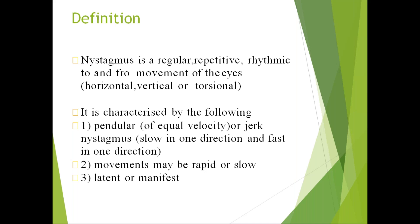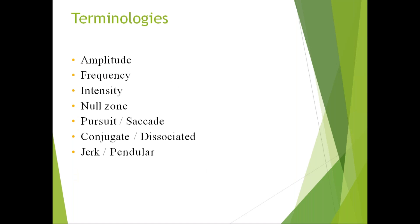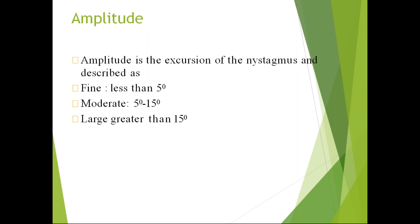Before going deeper into nystagmus, we need to know a few terms: amplitude, frequency, intensity, null zone, pursuit or saccade, conjugate or dissociated, and jerk and pendular movements. Amplitude is the excursion of the nystagmus and is described in degrees. Fine nystagmus is 5 degrees or less. Moderate amplitude is 5 to 15 degrees. Greater than 15 degrees is very high amplitude.